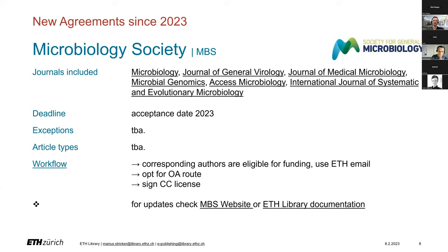You can publish in all seven Microbiology Society hybrid journals with no fee. Acceptance date in 2023 is relevant for funding. From the publisher's side, you will be recognized as eligible for funding by the ETH mail domain. After you have submitted an article, you can choose the open access route and sign a Creative Commons license. This happens, as with ACS, on the Copyright Clearance Center platform, also known as RightsLink.